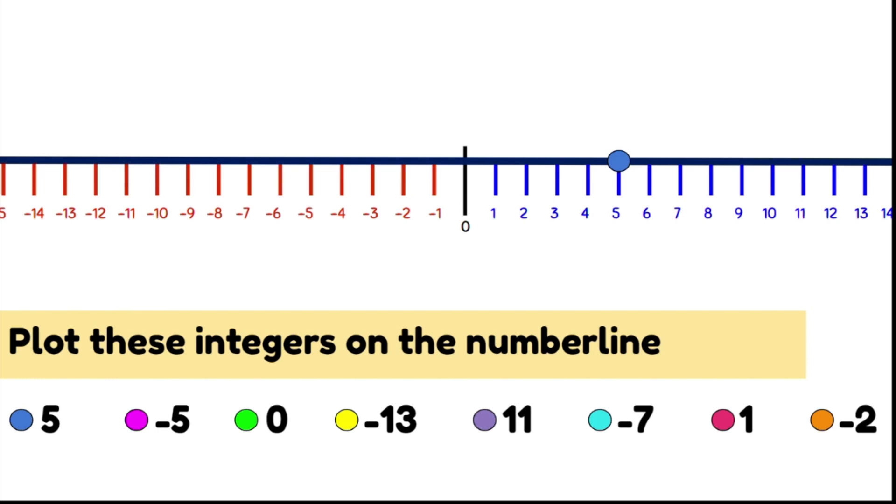Our next number is minus five or negative five. We're going to look to our zero and we're going to look to the left of our zero to find our negative numbers. It's minus five or negative five, so we're going to do five jumps to the left. Our next number is zero. Zero is found right in the middle of our positive and negative numbers.